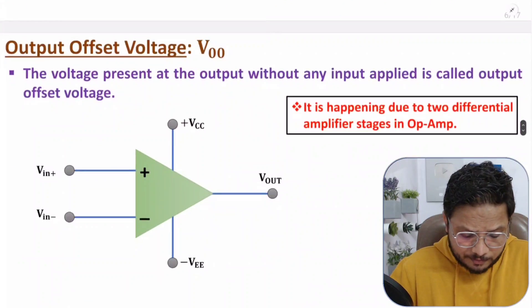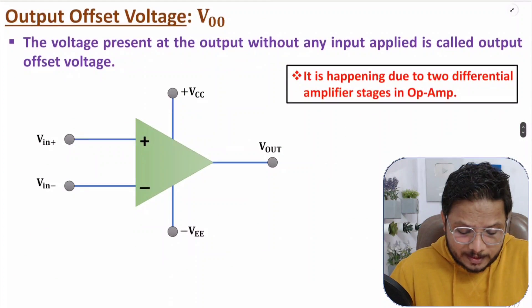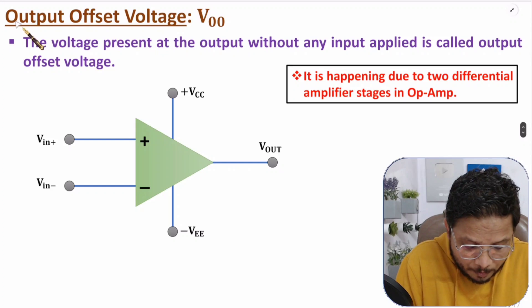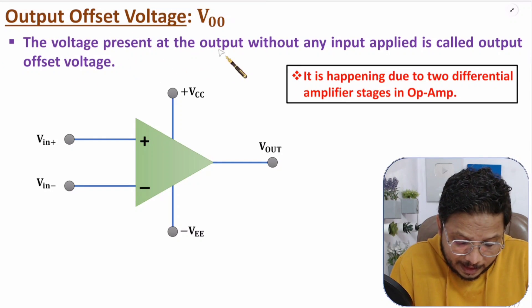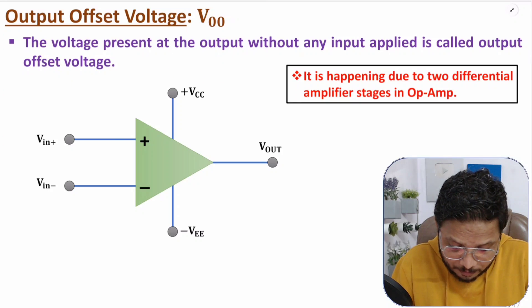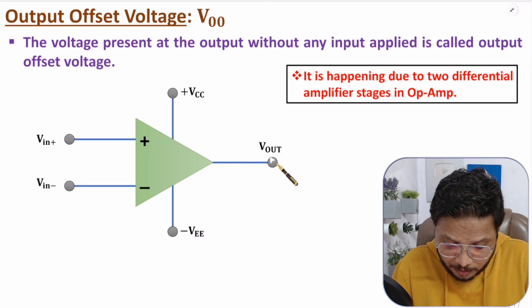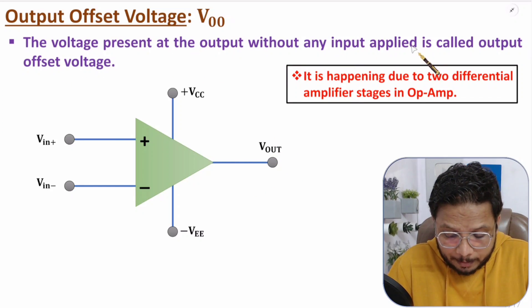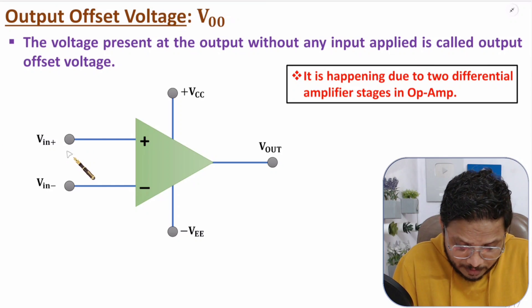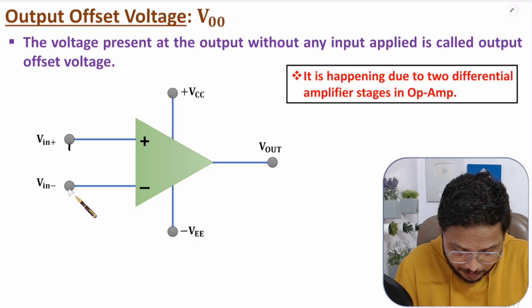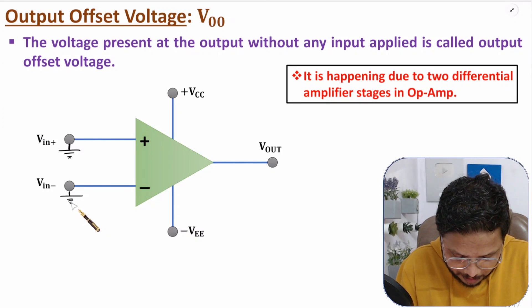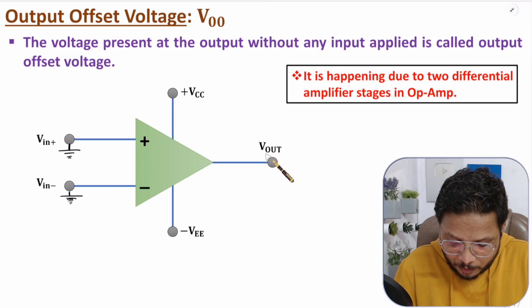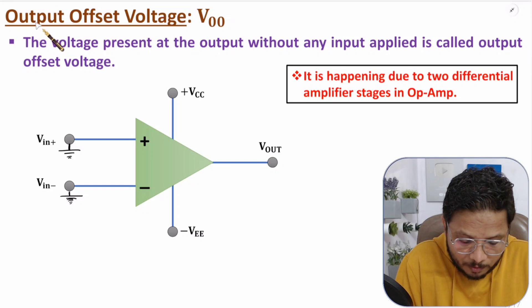Let us begin with the first parameter of operational amplifier, that is output offset voltage. Output offset voltage is present at the output without any input applied. So here both the non-inverting input and inverting input should be connected to ground. Whatever output appears at that time, that is output offset voltage.